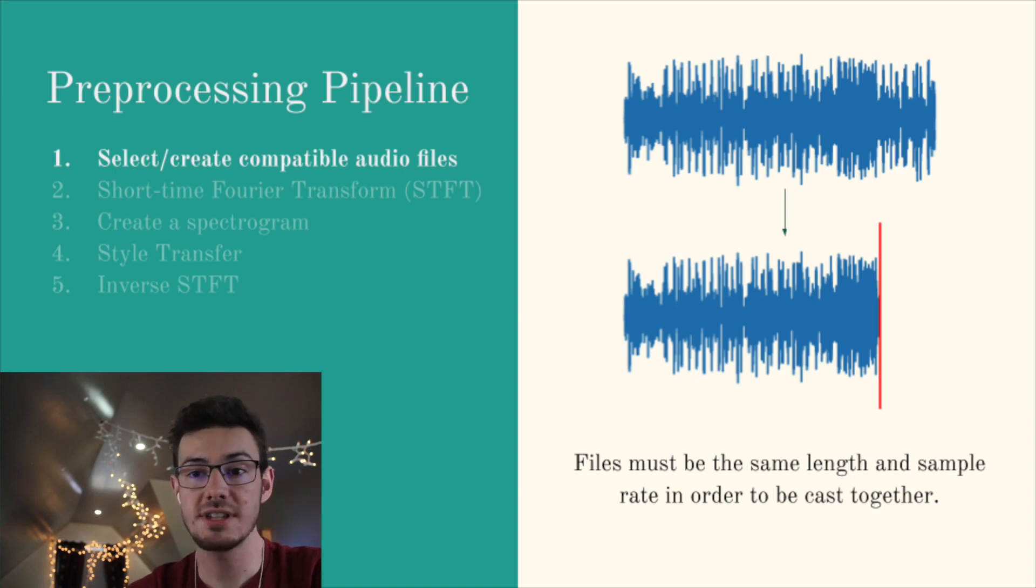The first step of preprocessing was really straightforward. All we needed to do was select the audio files which had the same sample rate and the exact same length. This ensured that our array representations in the style transfer step were guaranteed to be the exact same length. This step is not explicitly necessary, however, it makes working with the style transfer model later much easier.